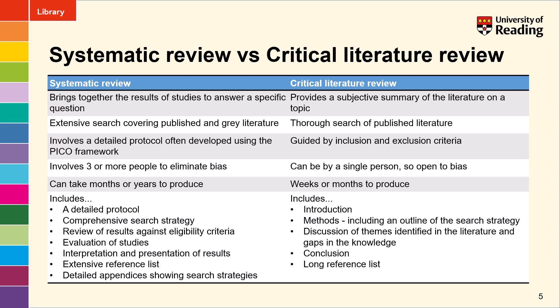A systematic review will include creating a detailed protocol, creating a comprehensive search strategy to run across multiple databases, reviewing the results against the eligibility criteria set out in the protocol, then evaluating the relevant studies to make sure they're reliable and interpreting those results to try and come to a conclusion. It will also include a reference list, and detailed appendices will usually be included which show the search strategies for each database used.